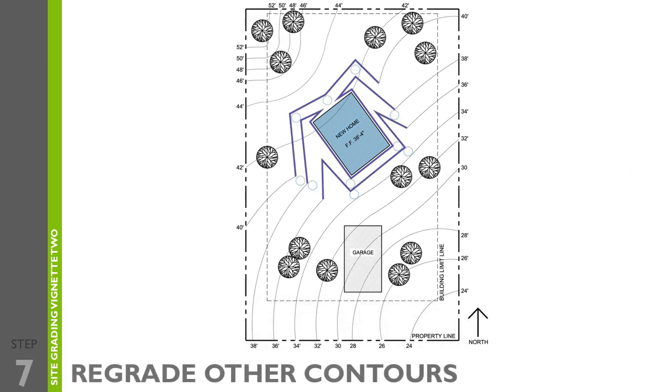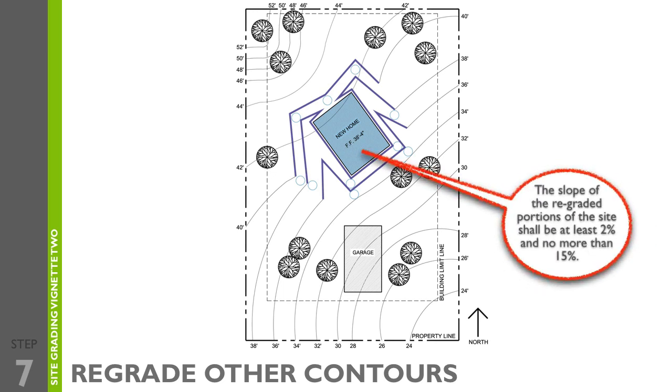Step seven is to regrade the other contour lines. Regrade the contour lines adjacent to your level area so that the minimum and maximum slope requirements for spacing between the lines is met. This may require a trial and error process in order to make sure you've chosen the best location for the level area.